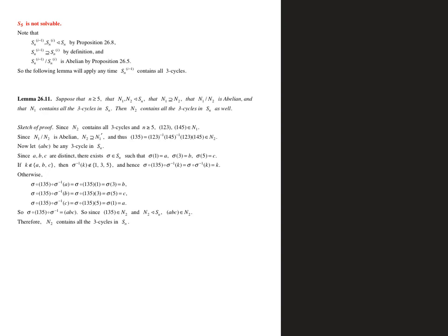So what we want to do is show that S5 is not solvable. We're going to show that the commutator subgroups of S5 never give us the identity, and the way we do that is by showing that all of the three-cycles belong to all of the commutator subgroups. That is, whenever we take the n-th commutator subgroup, we're going to have all possible three-cycles in Sn, and that's for any n greater than or equal to five.